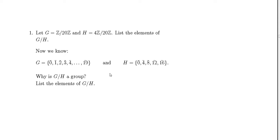The funny thing is that we are asked to list the elements and then to check if it is a group, and we do both at the same time. So now we know that G is this one and H is 0 bar, 4 bar, 8 bar, etc. So why is the division a group?